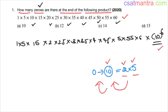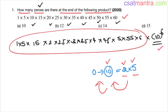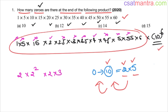I am looking for 2s in the remaining product: 1 — no 2; 5 — no 2; 15 — no 2; 2 — one 2; 25 — no 2; 35 — no 2; 4 — writing as 2², so two 2s; 6 — writing as 2×3, one 2. So in total there are 4 twos.